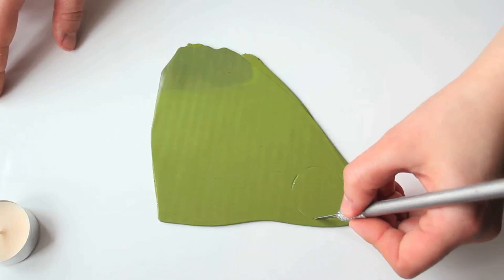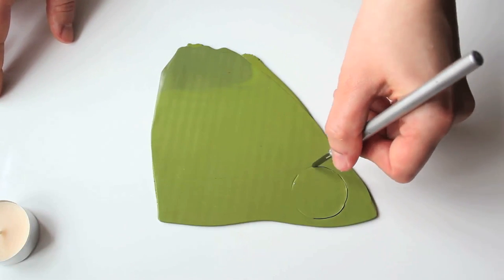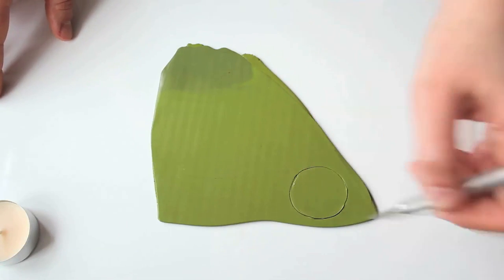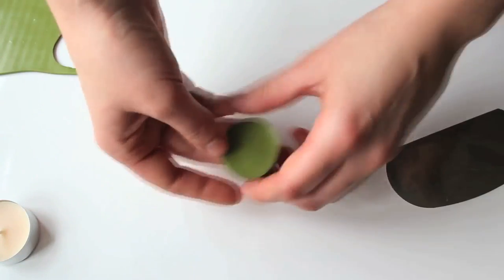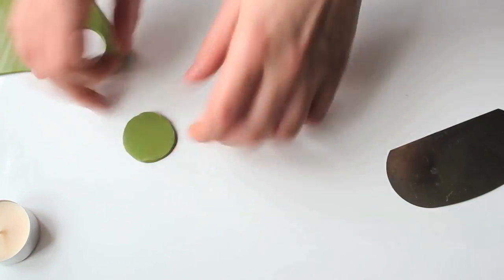Here I am using the actual candle to outline the circle. You can use a round clay cutter too. I will position it here on the left and continue working on the right.